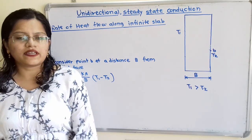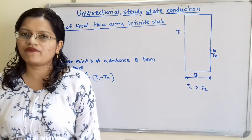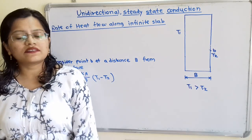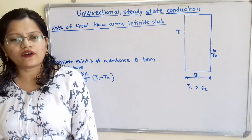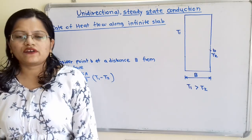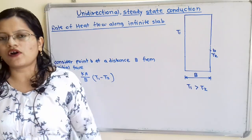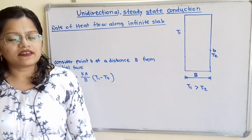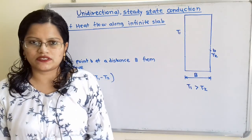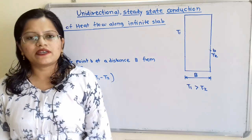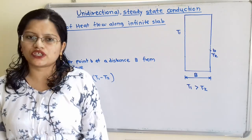Let us understand how to calculate the rate of heat flow through an infinite slab. We will consider some conditions. The first condition is that the rate of heat flow is unidirectional, meaning heat is flowing only along one direction. The second condition is that there is a steady state conduction process. Since this slab is of solid material, heat transfer is by conduction only.